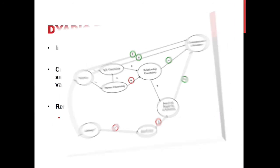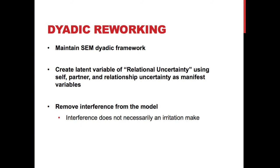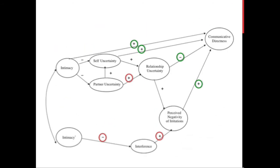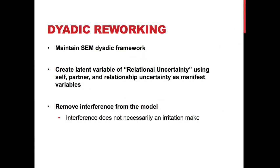As we get to the dyadic reworking, the first thing I want to do is maintain that structural equation dyadic framework we went over yesterday. I think testing the goodness of fit works well in this dyadic collection. I'd also like to create a latent variable of relational uncertainty, using self, partner, and relationship uncertainty as manifest variables — measuring them, combining them, and loading them onto relational uncertainty as a latent variable.